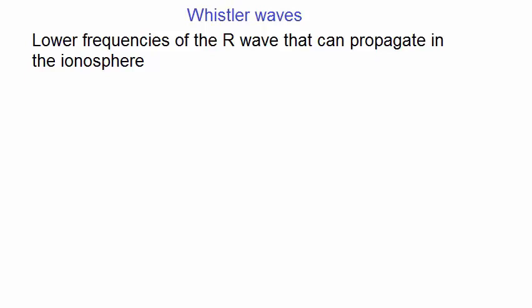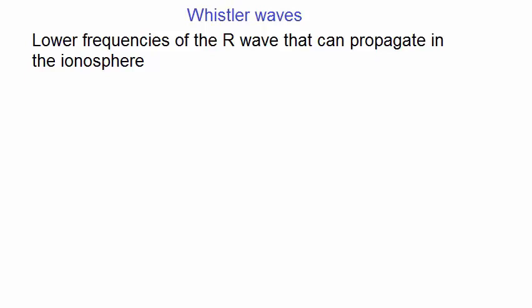Let's look at how they could arise. So Whistler waves are the lower frequencies of the r-wave that can propagate in the ionosphere. Here is a schematic diagram of the Earth with, say, plasma caught in the Van Allen belts in the ionosphere, given here by A, B and C. If you have a lightning strike in the right place, then an electromagnetic wave will travel parallel to the field lines, but the higher frequencies will reach the pole of the Earth sooner than the lower frequencies, and therefore you'll hear descending whistling tones if you had an appropriate radio receiver.